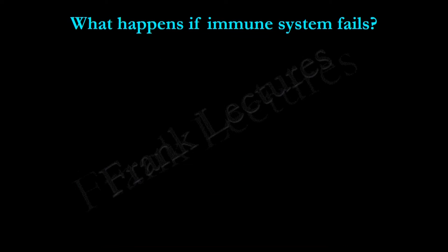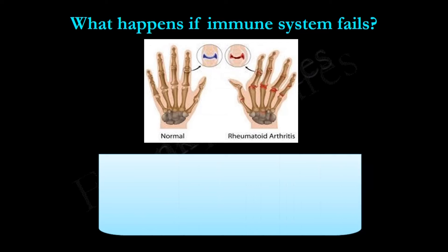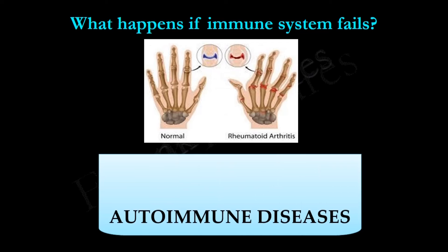Another consequence of immune system failure is autoimmune disease. In autoimmune disease, the immune system attacks self — it attacks and damages its own tissues. A well-known example is rheumatoid arthritis, where the immune system attacks the joints.